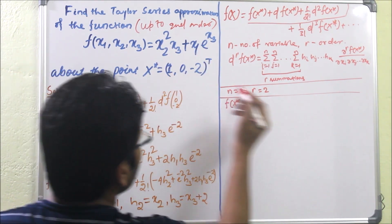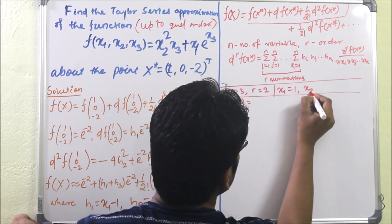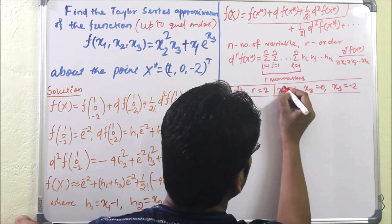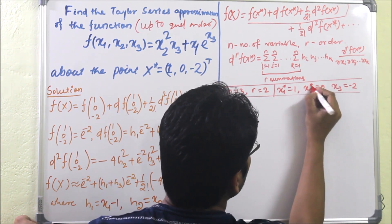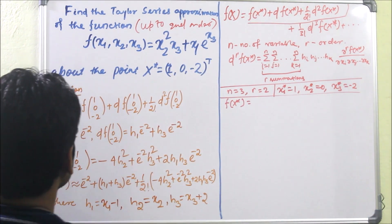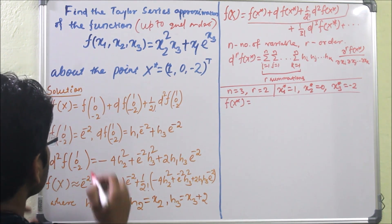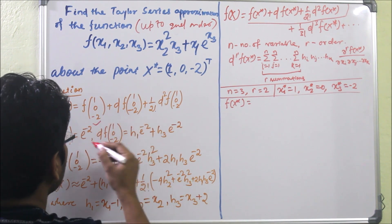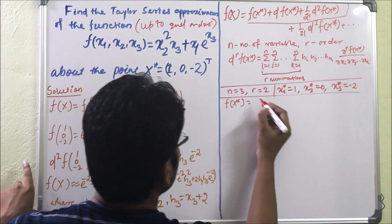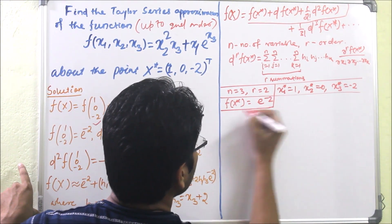So if we put this value into the function, we get f(1, 0, −2), which gives us e to the power minus 2. That is the value of f(x*).